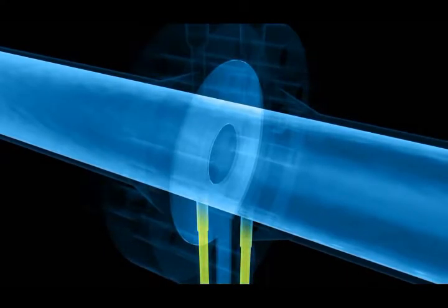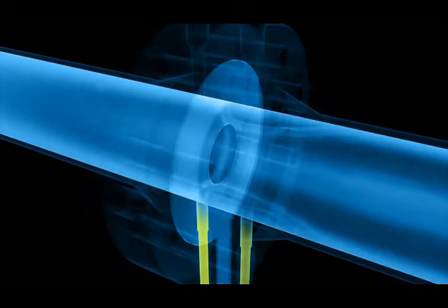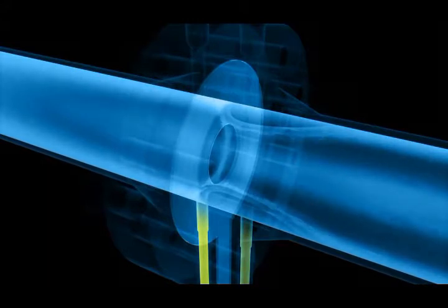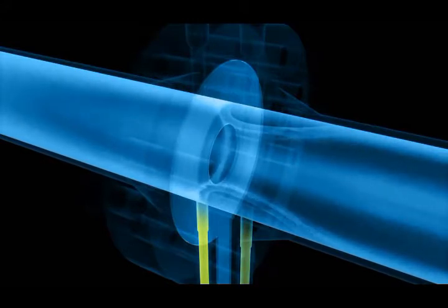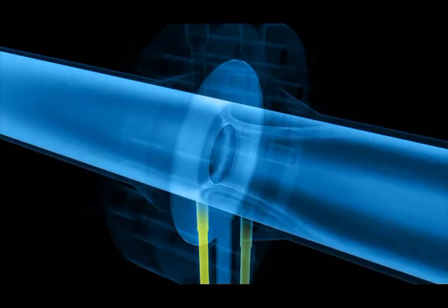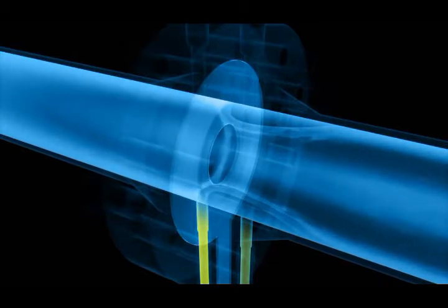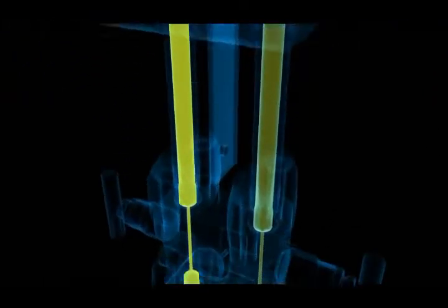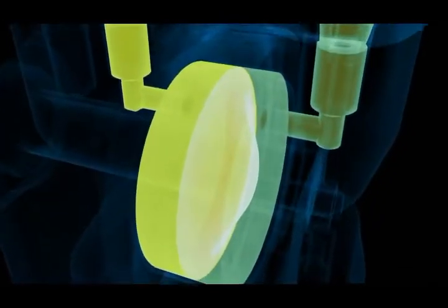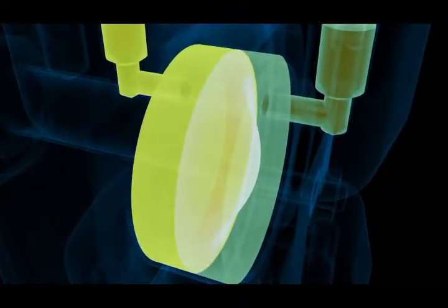If the fluid is not flowing, the pressure before and after the orifice plate is essentially identical. As soon as the fluid starts to flow, its velocity around the orifice plate increases significantly because of the restriction in the cross section. At the same time, due to the law of fluid mechanics, the static pressure at this point decreases.